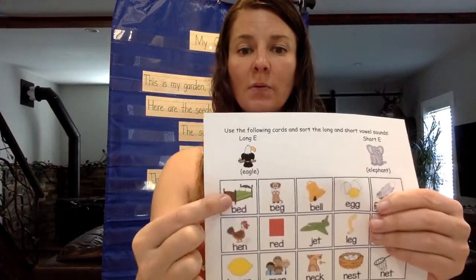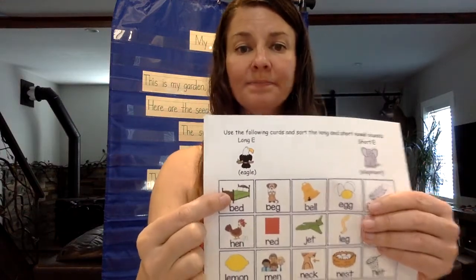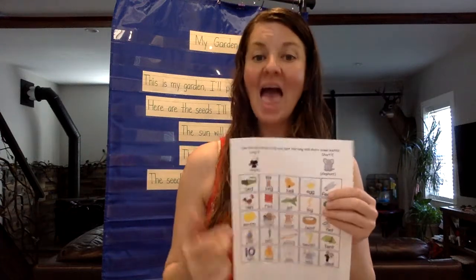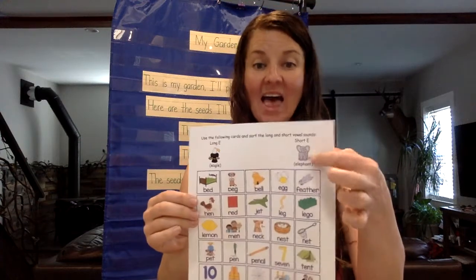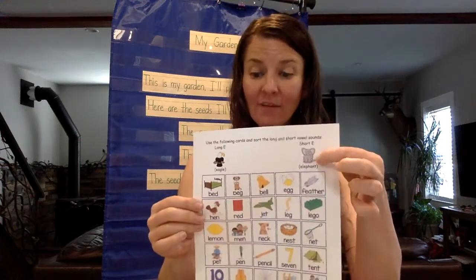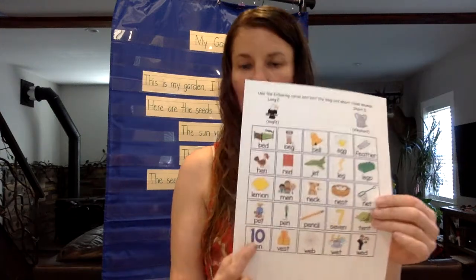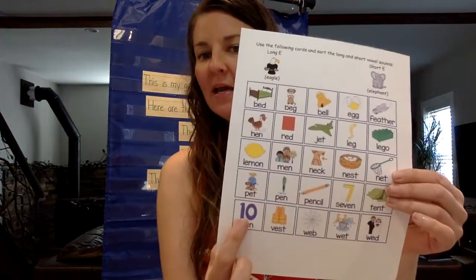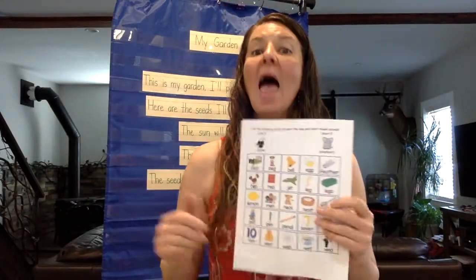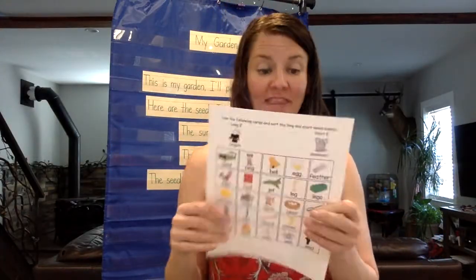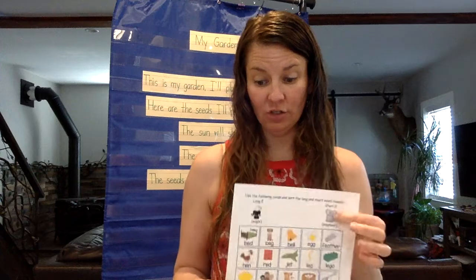Let's take a look at what words we have. Bed — B, E, that's a short E, like elephant. How about this one down here? Ten — T, E, short E, that's right, like elephant.